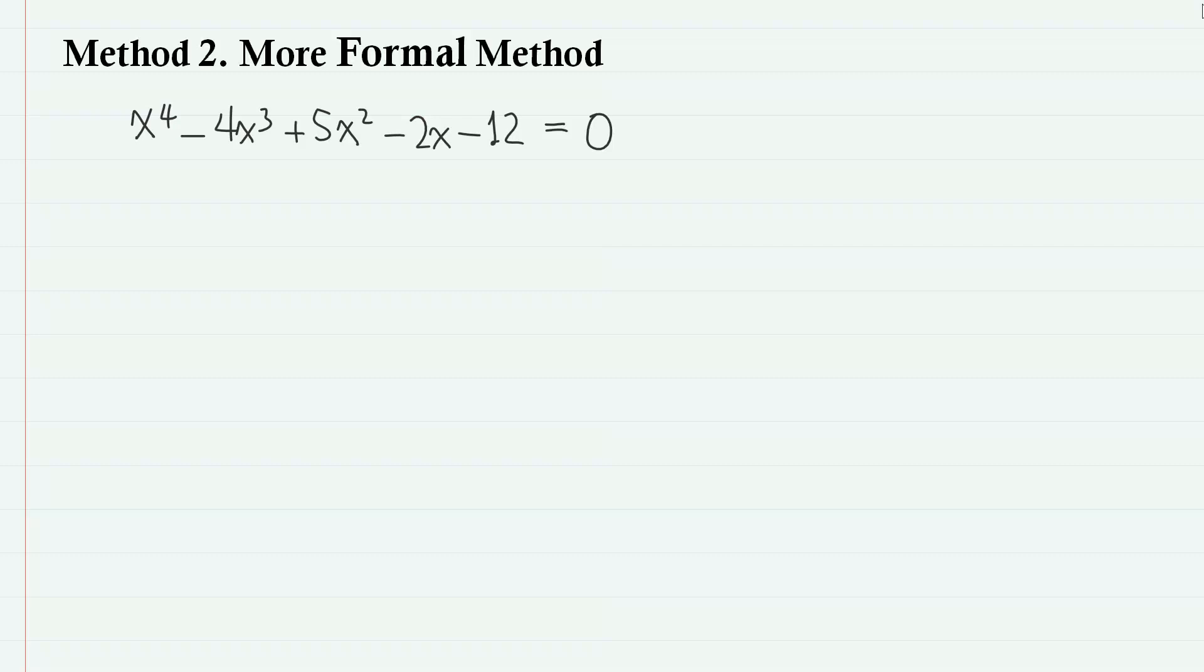Now let us take a look at the second method, which is more formal method that suits the textbook. That is, we try to factorize the left-hand side as far as we can. In order to do that, we need to find some factors. And we can find those factors without having to split this 5x squared term. Instead, we try to guess some roots.